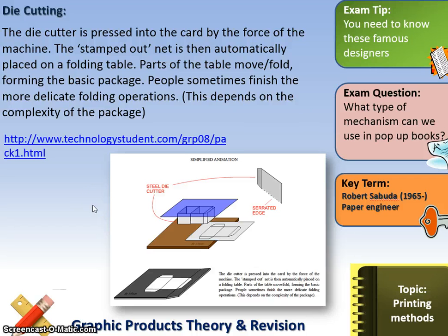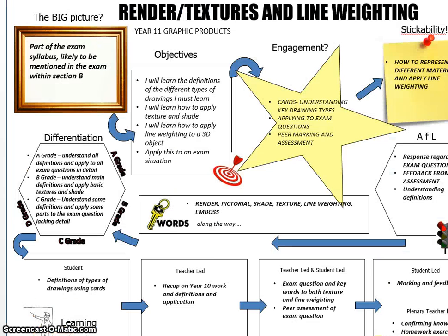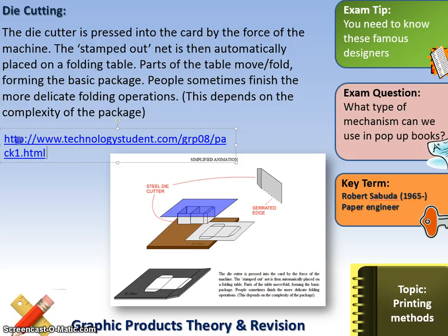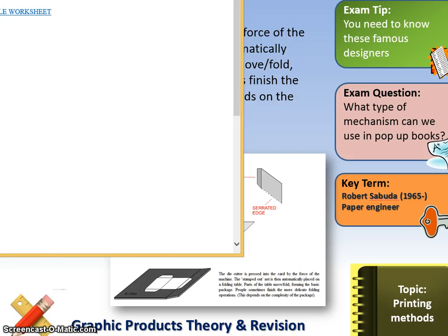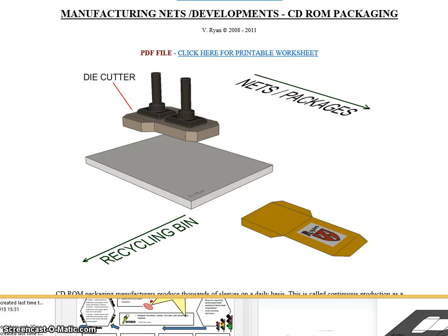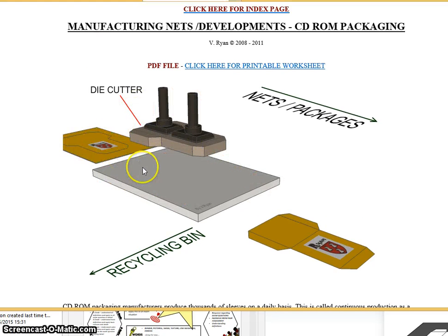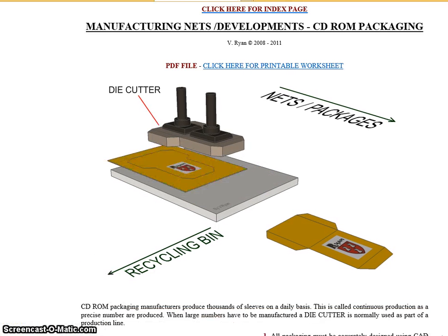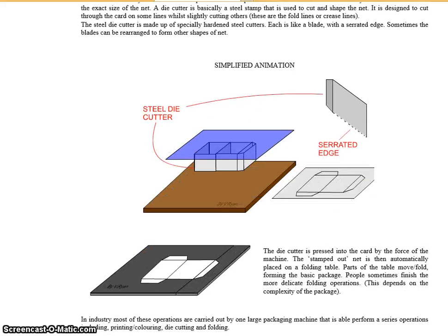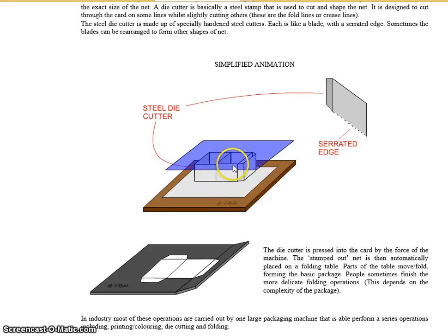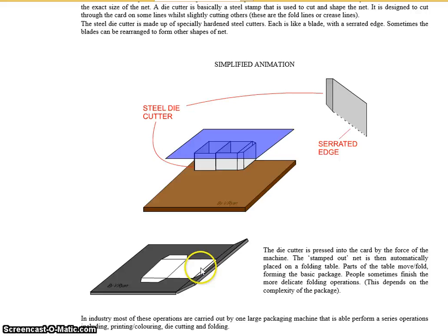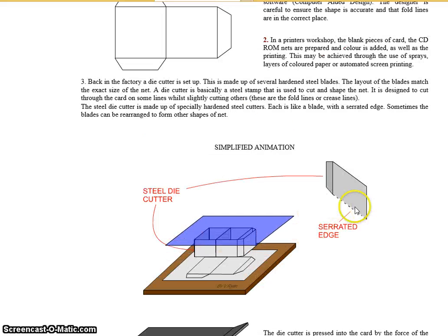Die cutting is an important process using a steel template that presses down onto card. It can be used for cutting out nets. Sometimes it has a serrated edge rather than a blade, which creates a crease instead of cutting through the card. In the diagram shown, paper comes in, is printed, and then the die cuts it out. Some die cutters also fold on the end, creasing or serating the edge rather than cutting it.